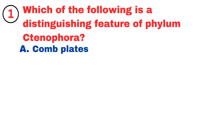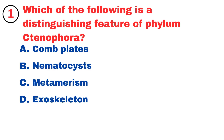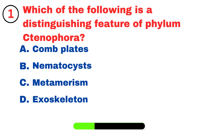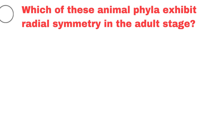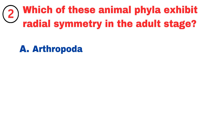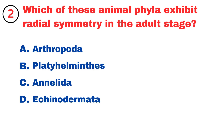Which of the following is a distinguishing feature of phylum Ctenophora? Comb plates. Which of these animal phyla exhibit radial symmetry in the adult stage?